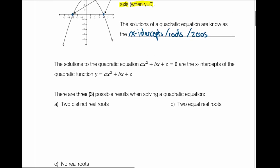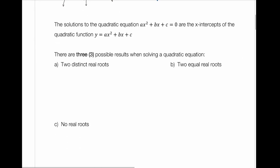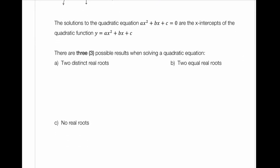There are three possible results you could have when solving a quadratic equation. One possibility is you have two distinct real roots. That would mean if you have a quadratic that looks something like this — it will cross the x-axis twice — or it looks something like this, where you cross the x-axis twice in two different locations.